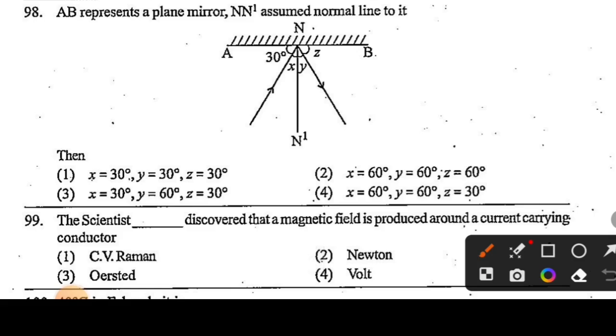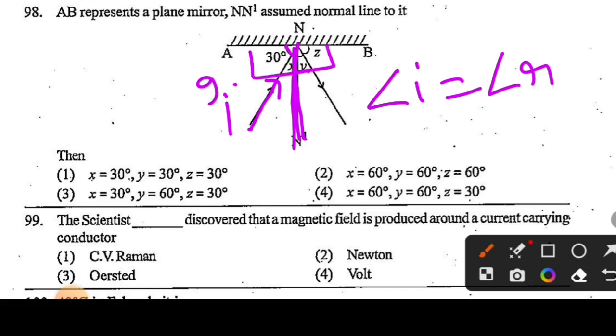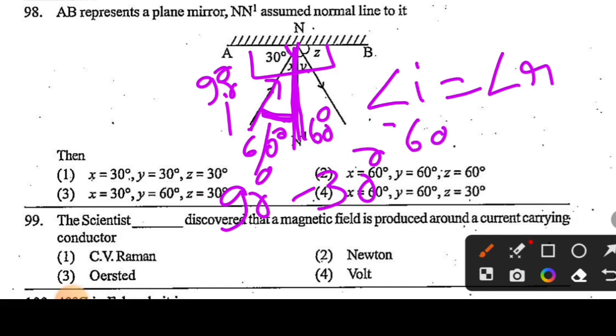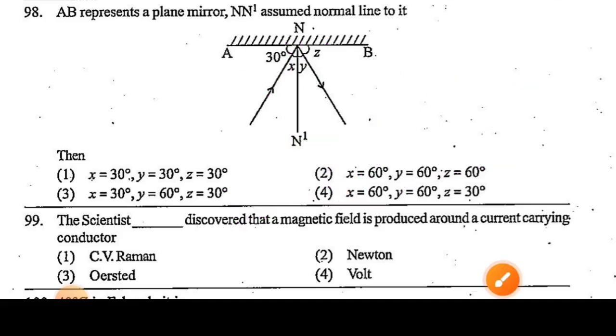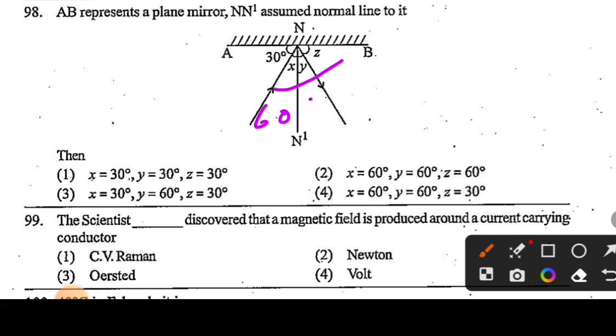Here it is a very nice question: AB represents a plane mirror and N' is the assumed normal line to it. As you know, angle of incidence equals angle of reflection. The incident ray makes 30 degree angle with the mirror. The straight line makes 90 degrees, so this angle is 90 minus 30, which is 60 degrees. So the angle of reflection is 60 degrees. We have to calculate x, y, z: this one is 60, this one is 60, and this one is 30 degrees. It is in option number 4.